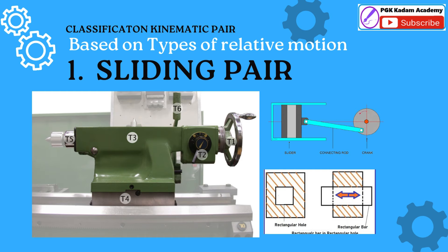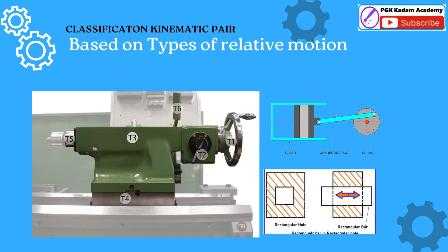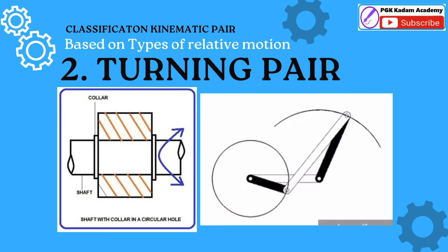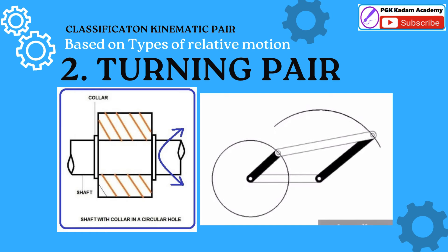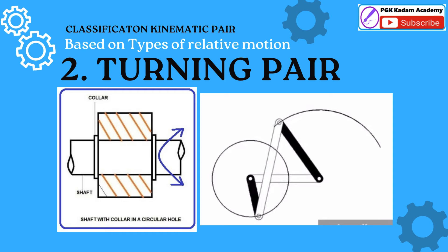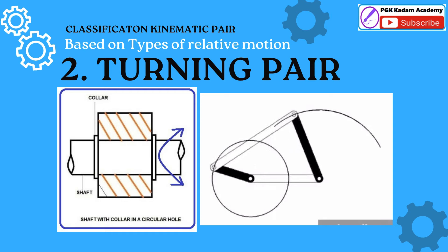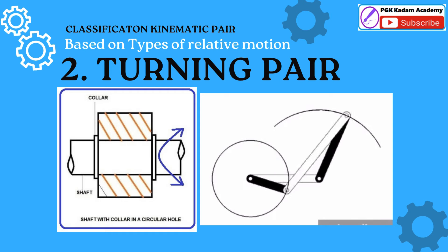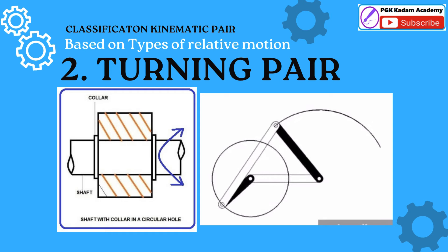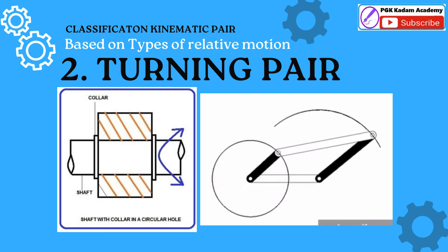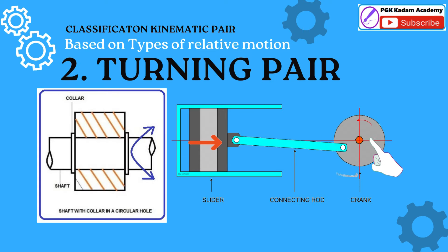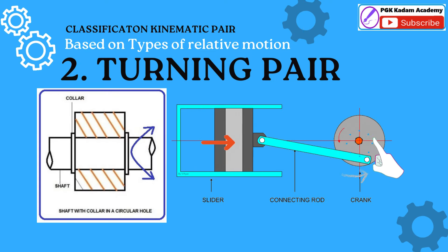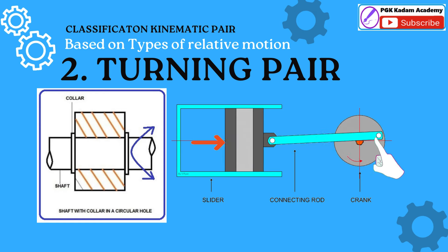Sliding Pairs are commonly found in various mechanical systems. A Turning Pair consists of two elements connected in such a manner that one is constrained to turn or revolve about a fixed axis of another element. When one element revolves around another element, it forms a turning pair. Example: a shaft with a collar at both ends revolving in a circular hole.